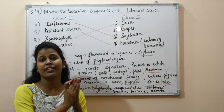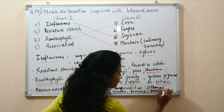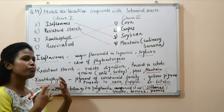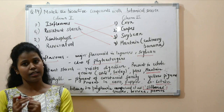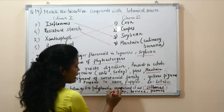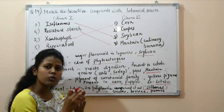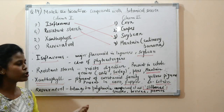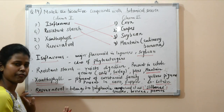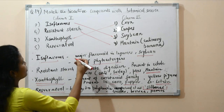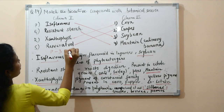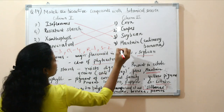Resveratrol is a polyphenolic compound belonging to the class called stilbenes — a specific class of polyphenols with high antimicrobial activity. They are present naturally in some products and are also produced in response to injury or stress. Resveratrol is present in grapes, berries, blueberries, and mulberries — particularly in their skins — and also in red wine. So resveratrol comes from grapes. The correct answer is P3 Q4 R1 S2, option B.